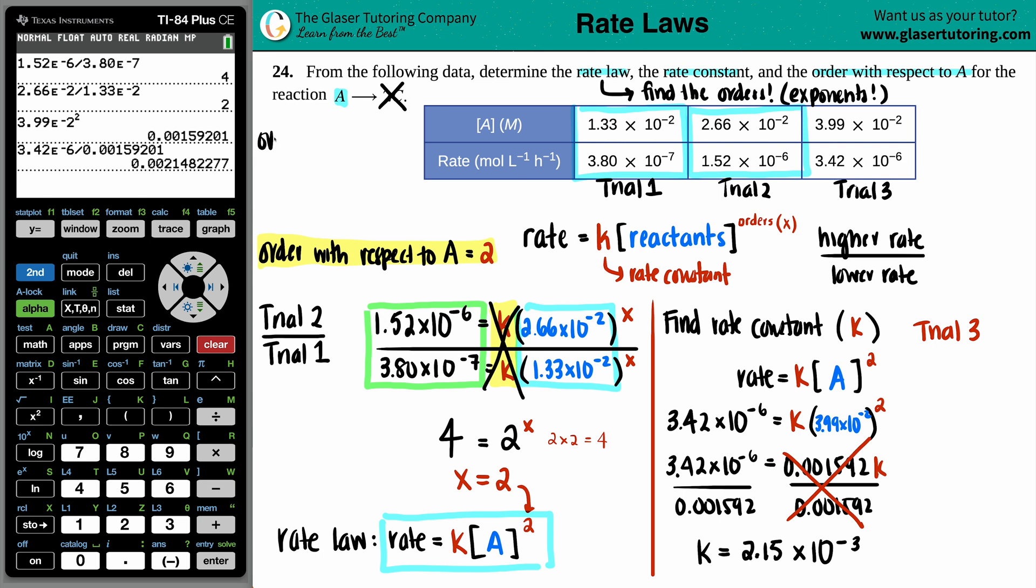So, just know that if you have an overall order of two, which is what we have here, the units for K is going to be written in a couple of different ways. But the one that I like to use is molarity to the negative one time to the negative one. This could be written as liter over mole times the time. So, it all just depends on what you want. But we could stick with molarity to the negative one, time to the negative one. And you could always find out these units if you plug in the units that they gave you into the rate law that you specifically have for your problem and just play the unit game.